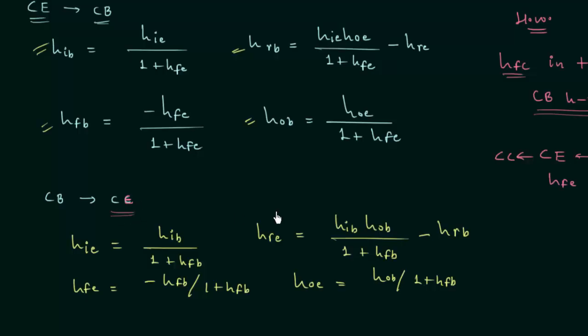This is the conversion of common base configuration to common emitter configuration — this is CE. So this is all for this lecture. If you have any doubt you may ask in the comment section. The derivation of these parameters is not important, so simply try to remember them and use them directly.